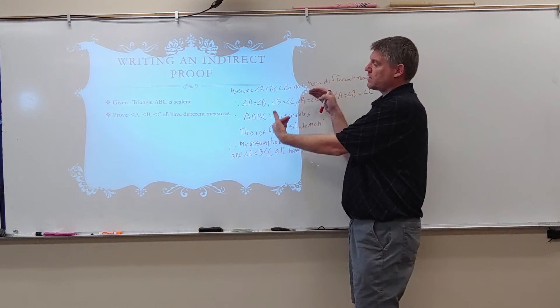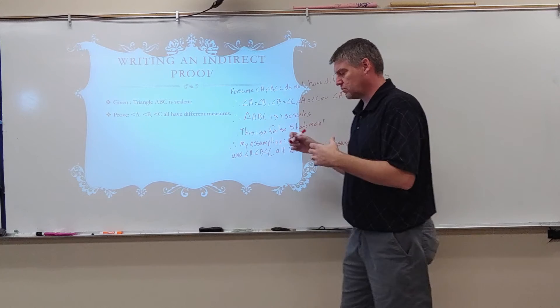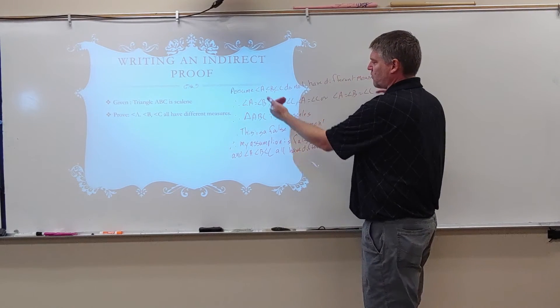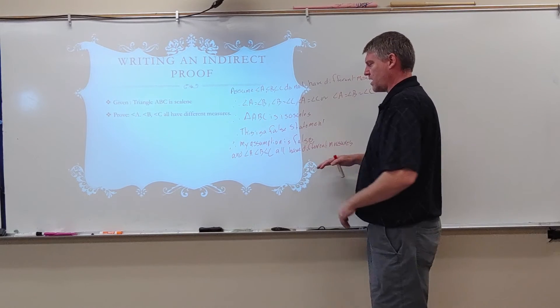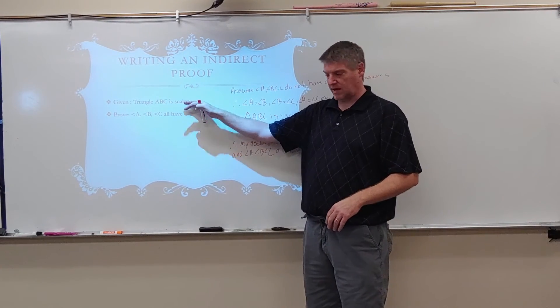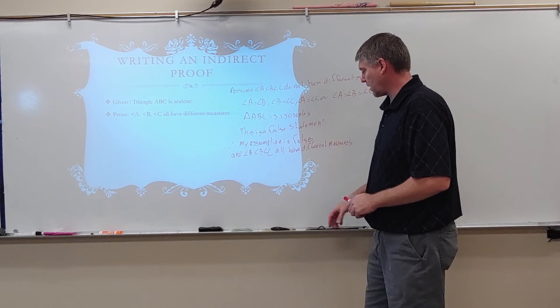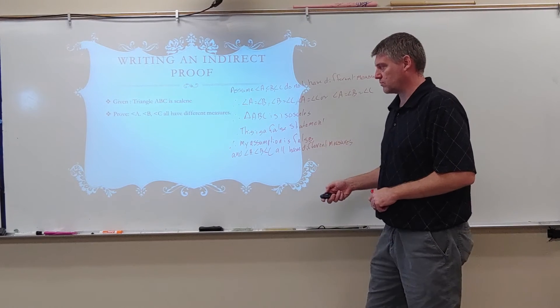So what I'm really looking at is going from my prove statement, assuming it's false, and working down until I get to a statement that is false from my given. It's something different from my given. Therefore, my assumption must be false, so my whole proof must be true.